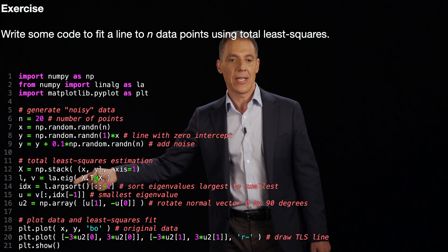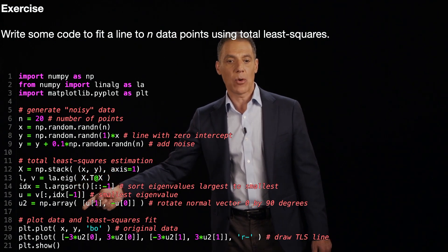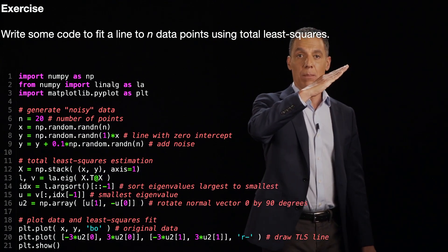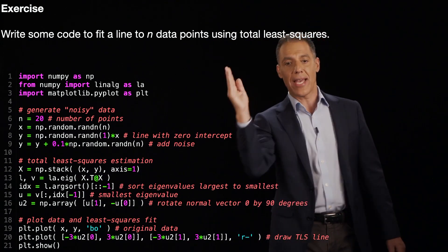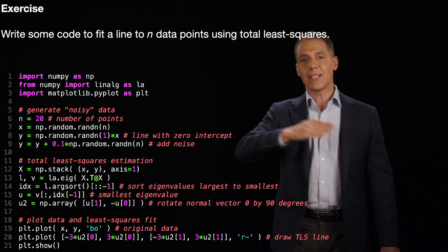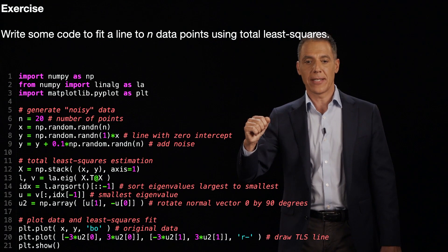And then I'm going to rotate that by 90 degrees because I've estimated the perpendicular vector, not the actual line. And the way I do that is I swap the coordinates and negate. That gives me a rotation by 90 degrees.